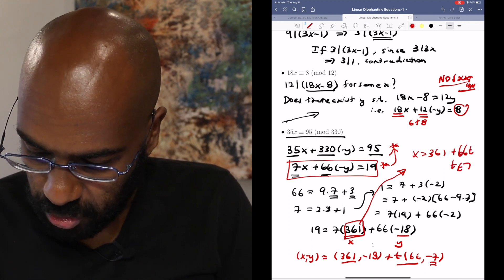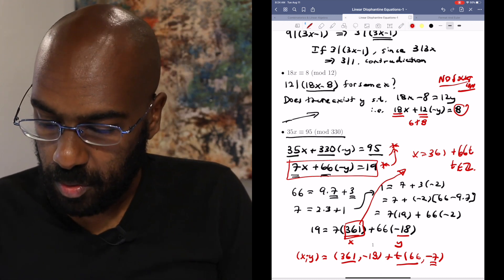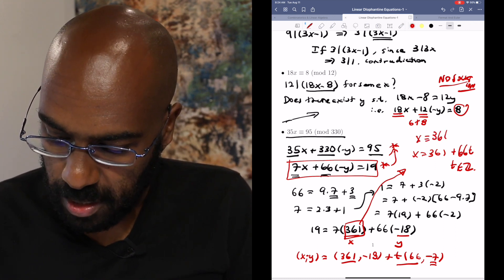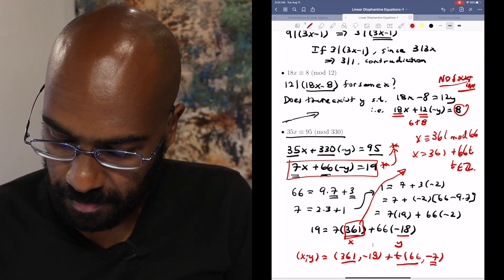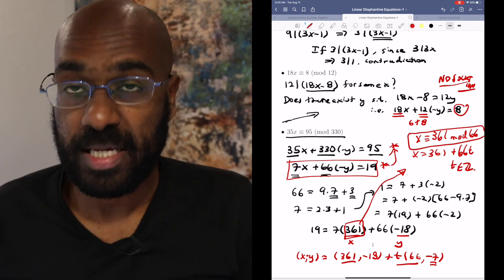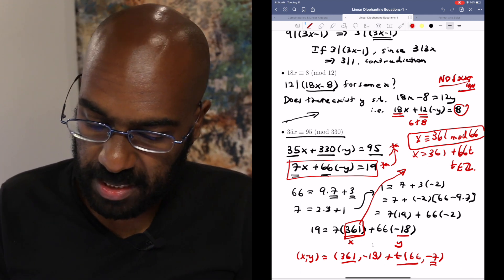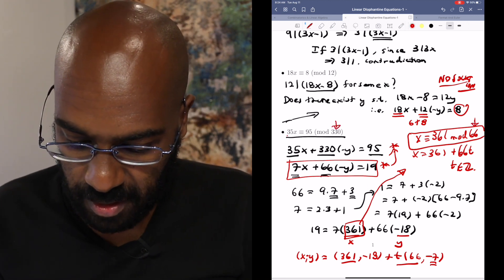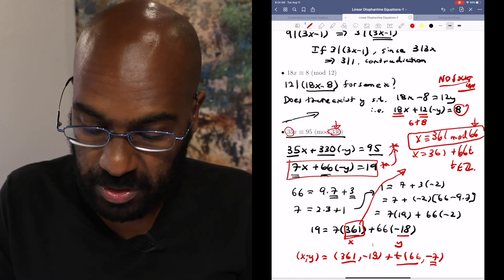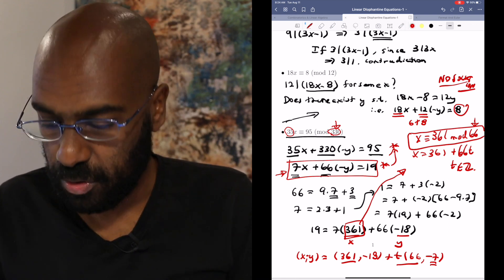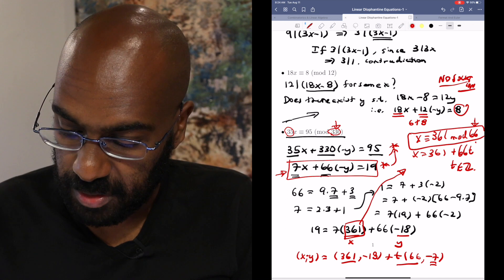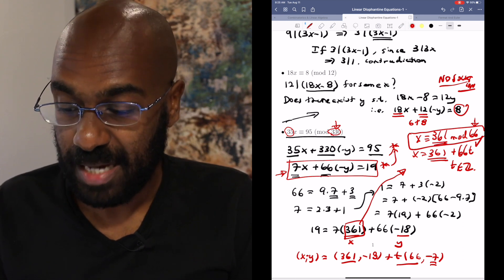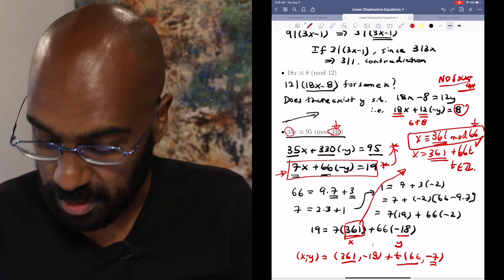So our complete solution set for x is numbers that look like 361 plus 66t, where t is an integer. So another way to word these is there the numbers x that are congruent to 361 mod 66. And so we get a complete solution set here, and we see that the solution set is not modulo 330, it's actually modulo a factor of it. And the reason has to do with the fact that 35 and 330 have this common factor of 5 that we're able to reduce out in this linear congruence equation right here. But this does give us a complete solution set for what values of x actually work, and we can reduce 361 appropriately to be smaller so that it actually lies in the range between 0 and 65, because that's what we're typically used to doing.